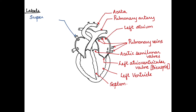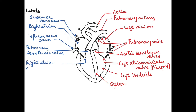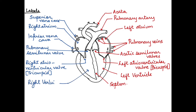The septum separates the right and left ventricles. Moving to the right side: we have the superior vena cava at the top, then the right atrium, and the inferior vena cava which brings deoxygenated blood from the lower parts of the body. Next is the pulmonary semilunar valve at the base of the pulmonary artery. Between the right atrium and ventricle is the tricuspid — the right atrioventricular valve — and finally the right ventricle. With this we complete the labeling of the heart.